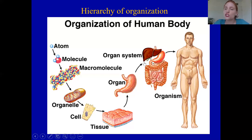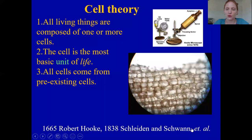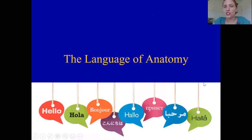If you take all the different organ systems working together, you create one organism — the full, whole creature. As a hierarchy, a collection of something smaller works together to perform a particular function and make something bigger. Remember: cells are the smallest piece of the body considered to be alive. Atoms, molecules, macromolecules, and organelles are smaller but not alive. We'll talk more about what it means to be alive later. That's all for this segment — please move on to the next one, where we'll talk about the language of anatomy.